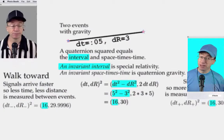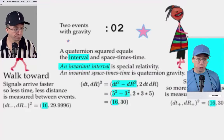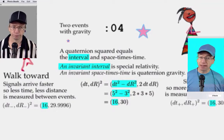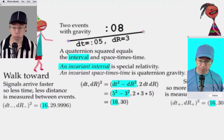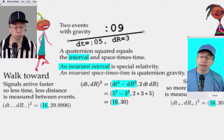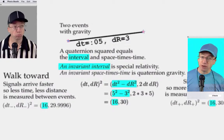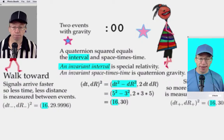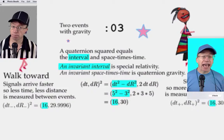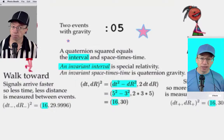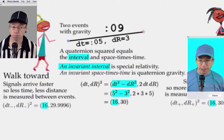Hello, I'm special relativity Doug, in blue. Everything on this page that's blue is about special relativity. A quaternion squared equals an interval — the important thing — and the space-times-time. Because an invariant interval is special relativity. What does that mean exactly?